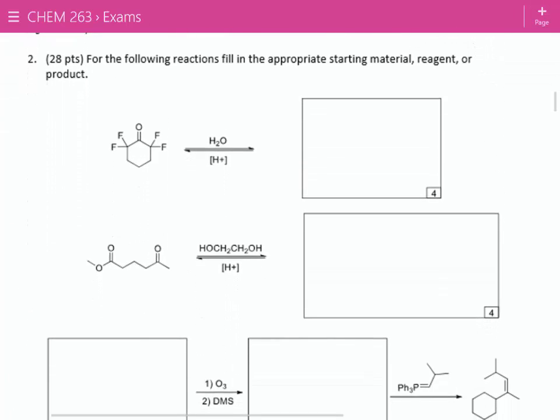The next one, we've got water and acid. In this case, we've got a ketone, but it's very electrophilic. Why is that? The fluorines are very electronegative. So in this case, the equilibrium will actually lie very far on the right, and we'll get a hydrate.